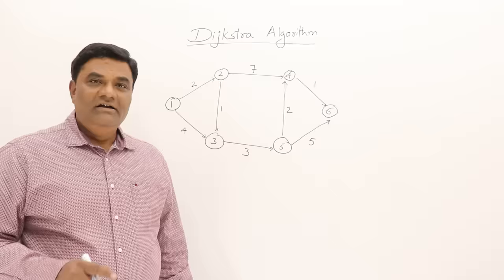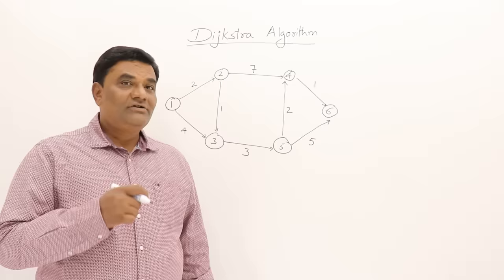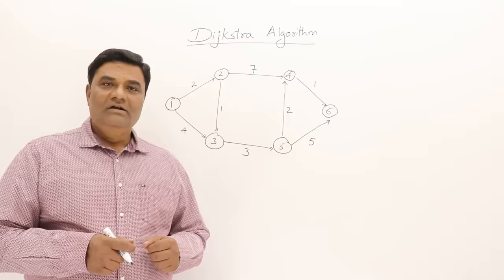The greedy method says that a problem should be solved in stages by taking one step at a time and considering one input at a time to get an optimal solution. In greedy method there are predefined procedures, and we follow that procedure to get an optimal solution. So Dijkstra's algorithm gives a procedure for getting an optimal solution — that is the minimum result, that is the shortest path. In this video, I will show how Dijkstra's algorithm works, and also show you the drawback of Dijkstra's algorithm.